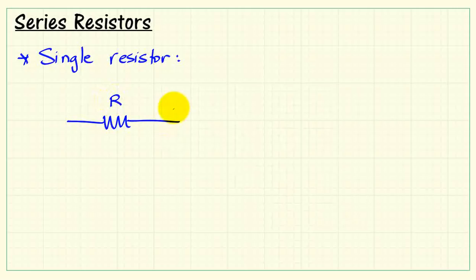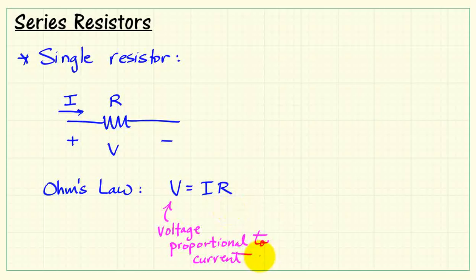It has a resistance denoted R. And associated with this two-terminal device, we have a voltage across the device and a current going through the device. Ohm's Law describes the behavior of the resistor and says that the voltage is equal to the current times the resistance.